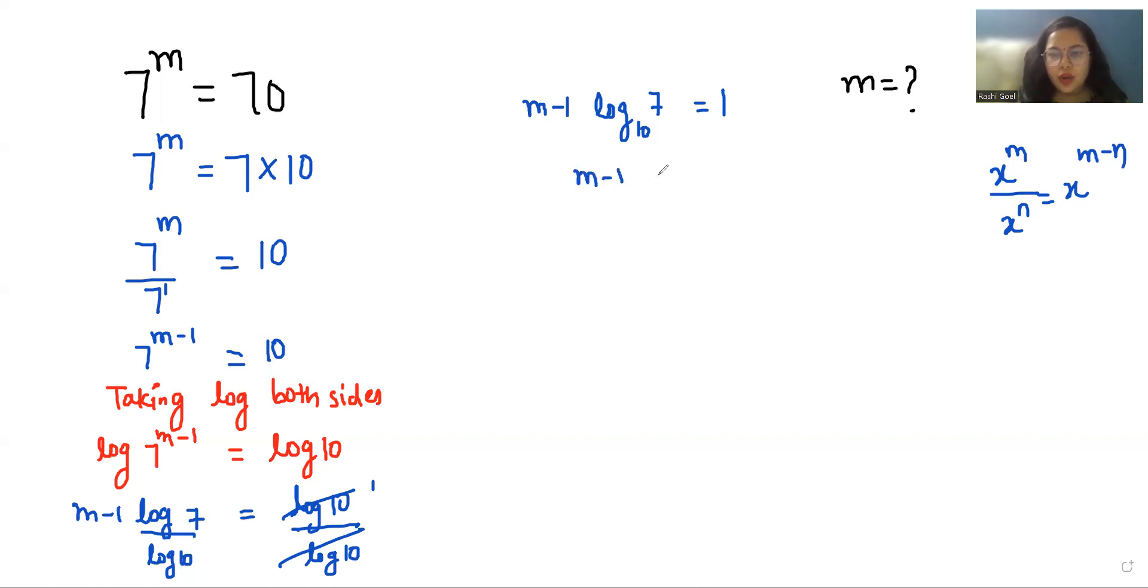So m-1 equals 1 by log₁₀7. M equals 1 by log₇10 plus 1. M equals 1 by log₇10 plus log₁₀7 with base 10.